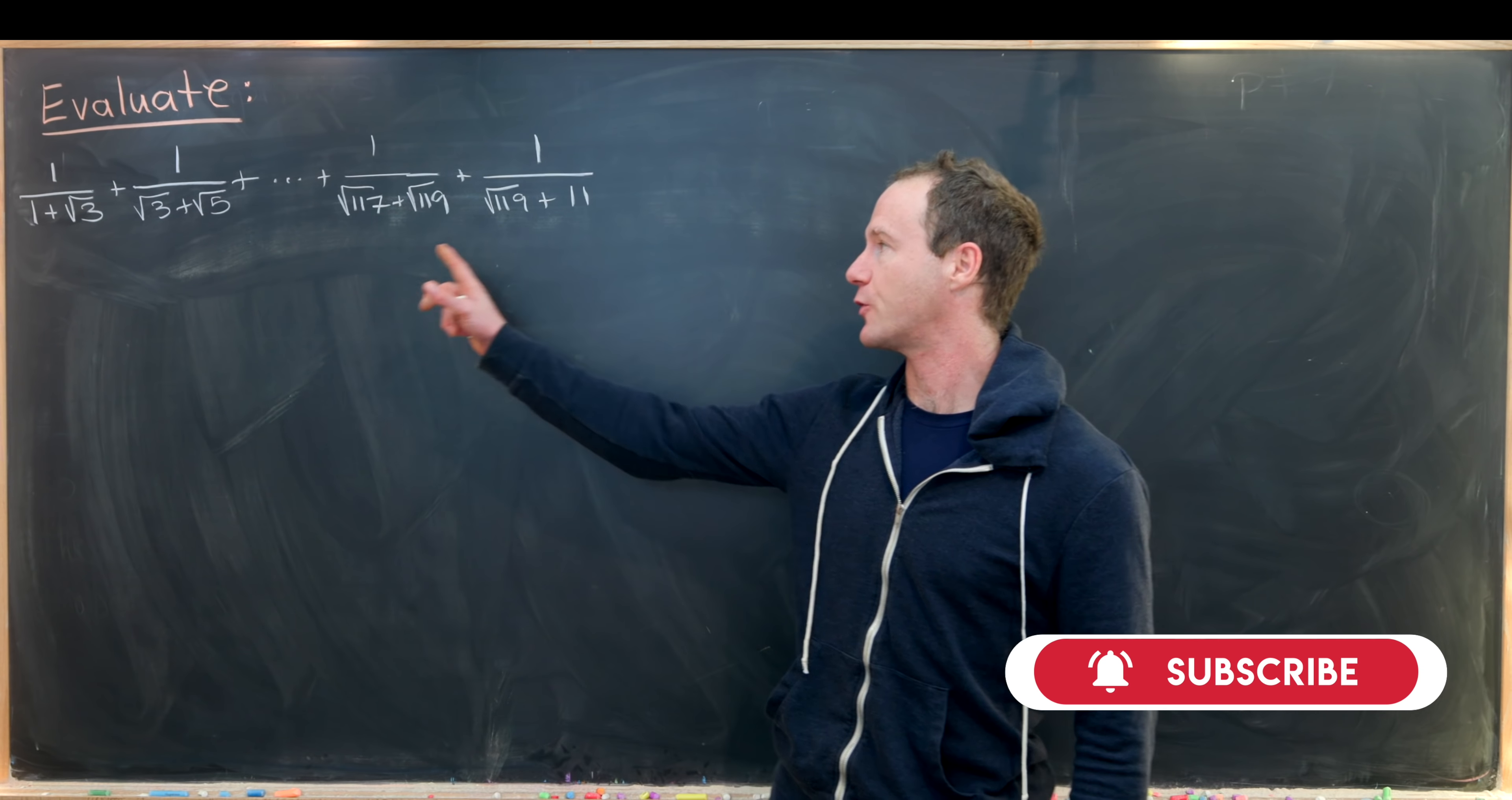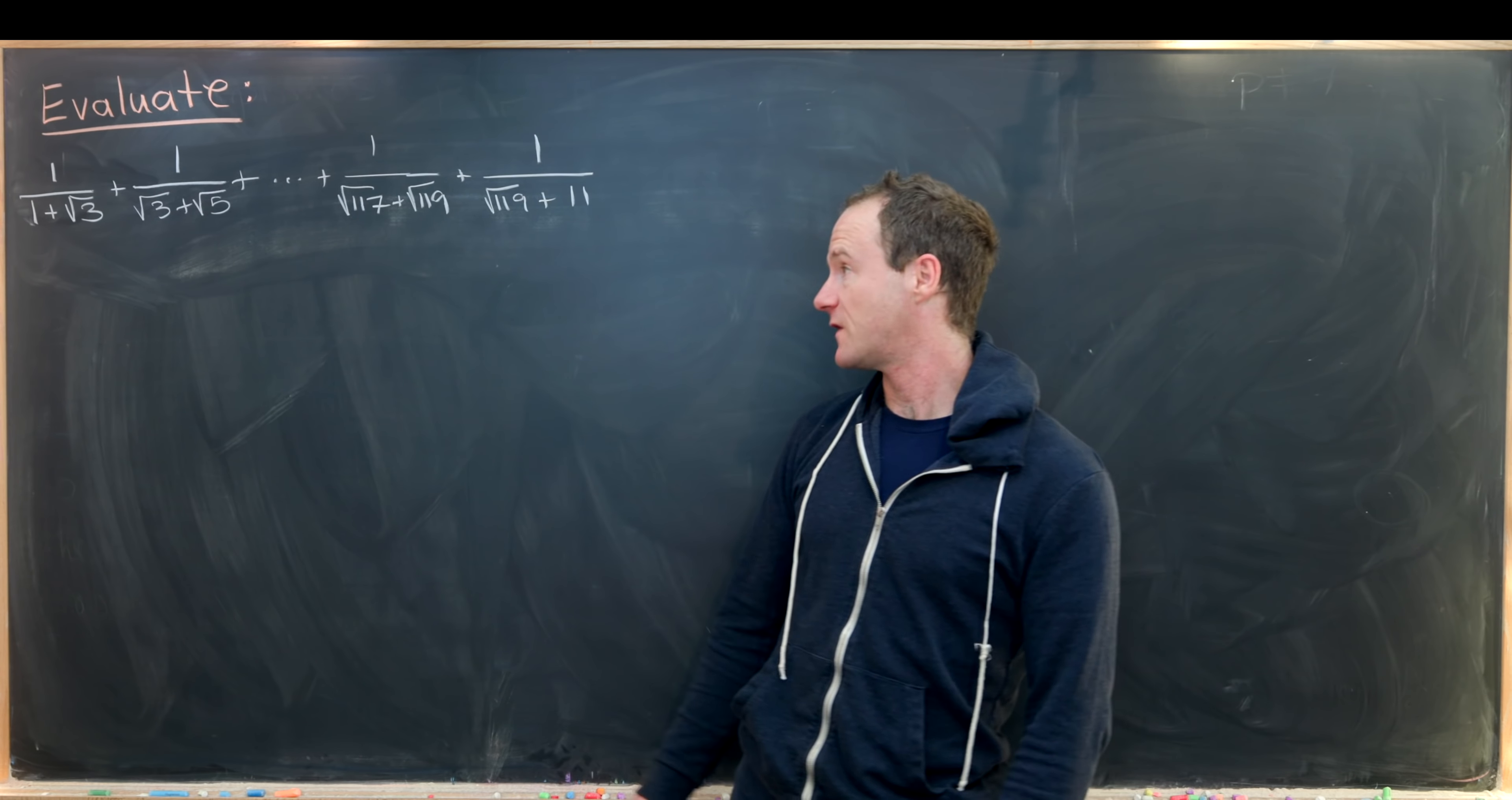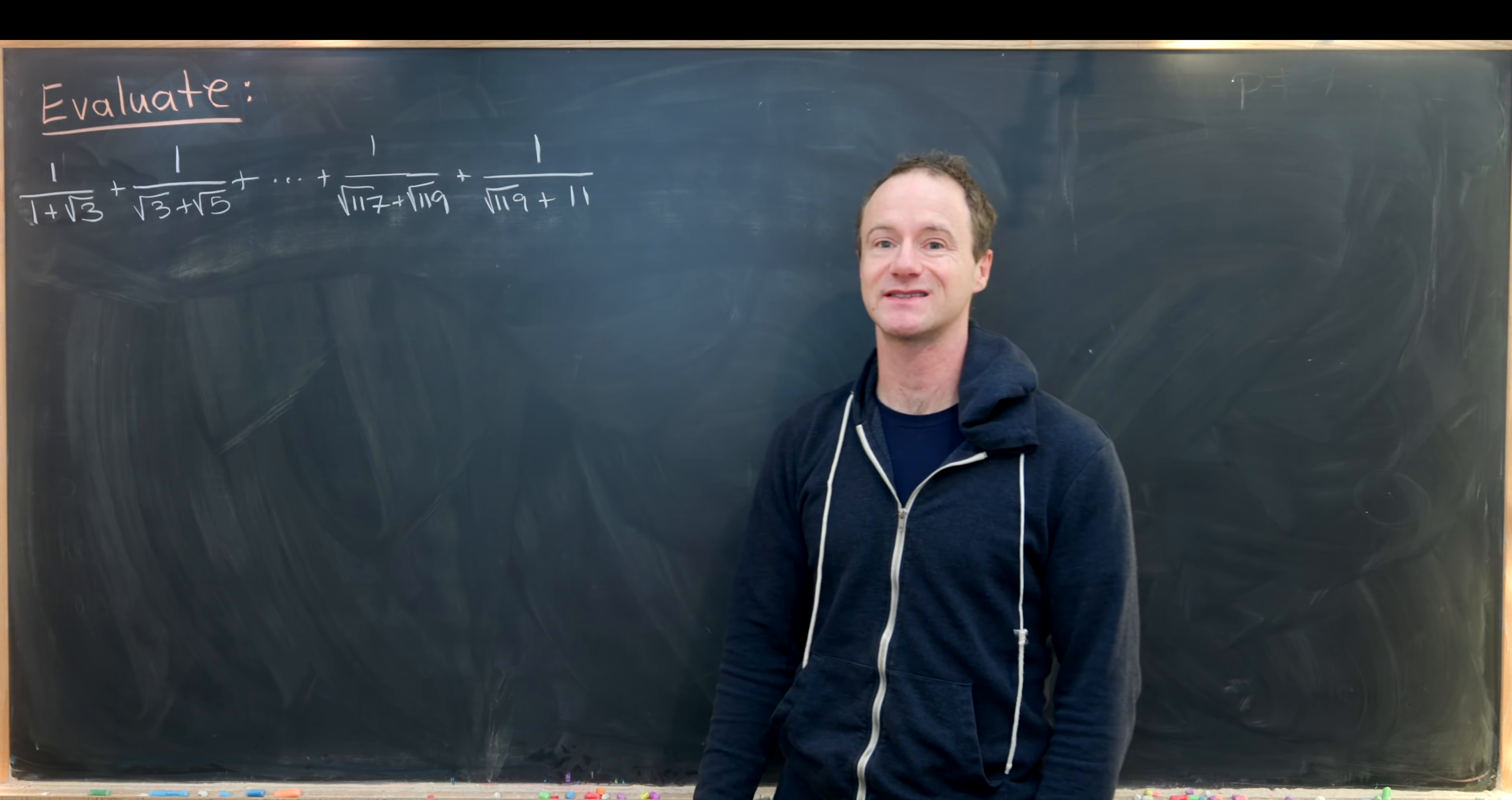So our goal is to evaluate the following finite sum. We start with 1 over 1 plus the square root of 3, plus 1 over the square root of 3 plus the square root of 5, plus dot dot dot all the way up to these last two terms which are 1 over the square root of 117 plus the square root of 119, plus 1 over the square root of 119 plus 11.